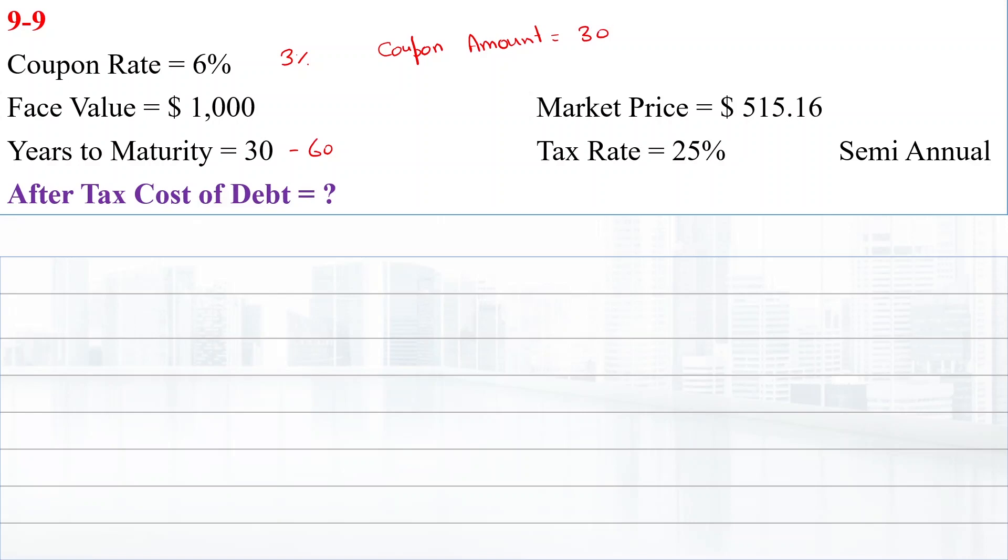To find the cost of debt, we have to find the yield to maturity of the bond. Yield to maturity can be computed using the IRR formula.